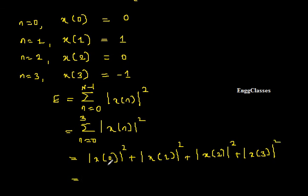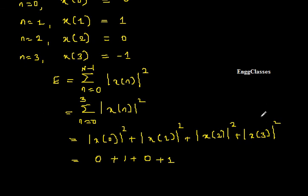We have values already. x(0) is 0, x(1) is 1, 1² is again 1, x(2) is 0, and x(3) is -1, square of that is +1. So ultimately we are going to get 1+1 which equals 2. So energy equals 2 and it has the unit of joules.